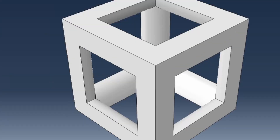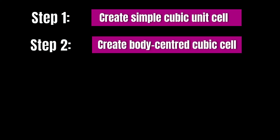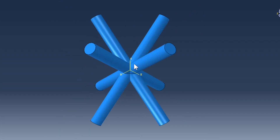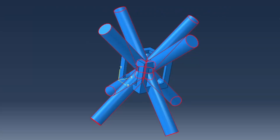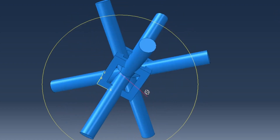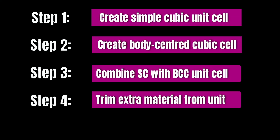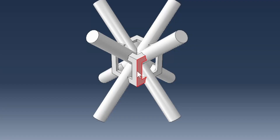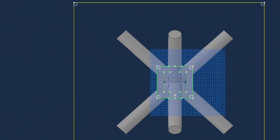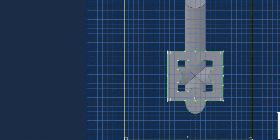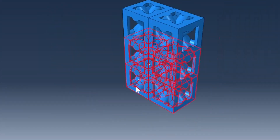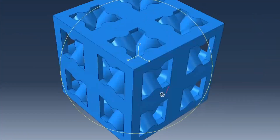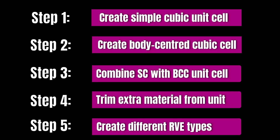The first step is to create the simple cubic unit cell. Then step two, to create the body-centered cubic unit cell. Step three, we combine the SC with the BCC unit cell. And then step four, because there are going to be extra materials, we'll need to trim extra materials to preserve the integrity of our unit cell. And then step five, we'll go on to create other representative volume elements for this structure.